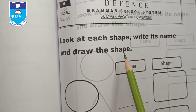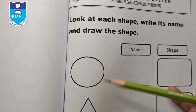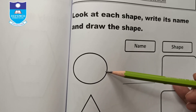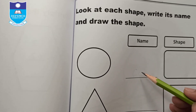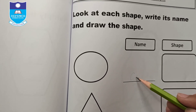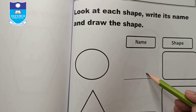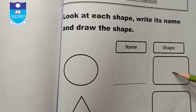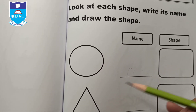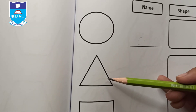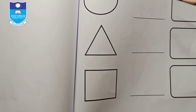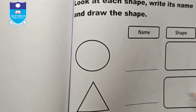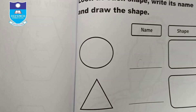Look at each shape, write its name, and draw the shape. The first picture is a circle — write 'circle' (C-I-R-C-L-E) and draw the circular shape. Similarly, write the names and draw the shapes for triangle and rectangle.